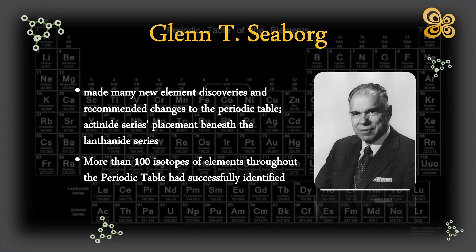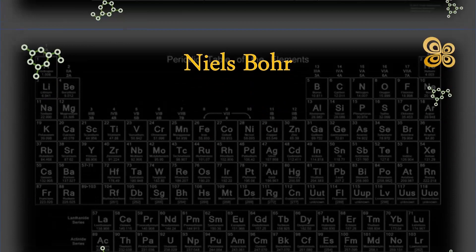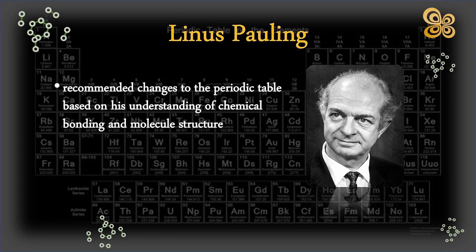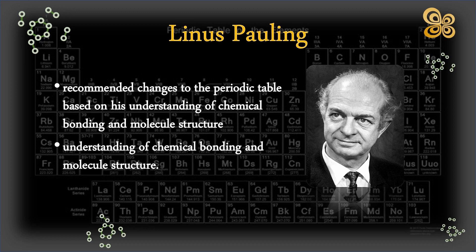Niels Bohr, a Danish physicist who helped explain the periodic features of the elements in terms of their electronic structure by developing the Bohr model of the atom. Linus Pauling, an American chemist who recommended changes to the periodic table based on his understanding of chemical bonding and molecule structure, and proposed the simplest formula to calculate the stabilization of bonds due to the electronegativity difference between atoms. Linus Pauling made significant advances to our understanding of chemical bonding and molecule structure.